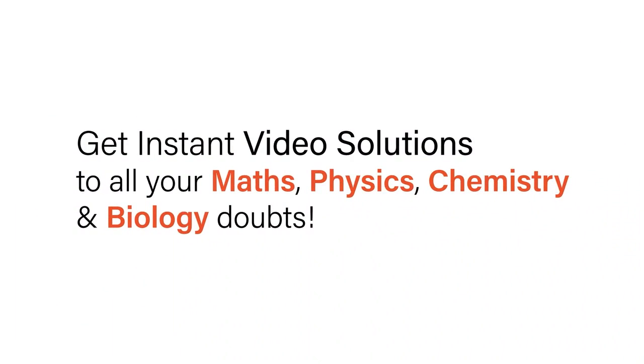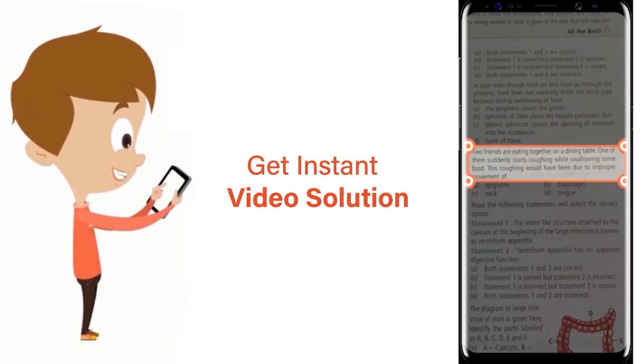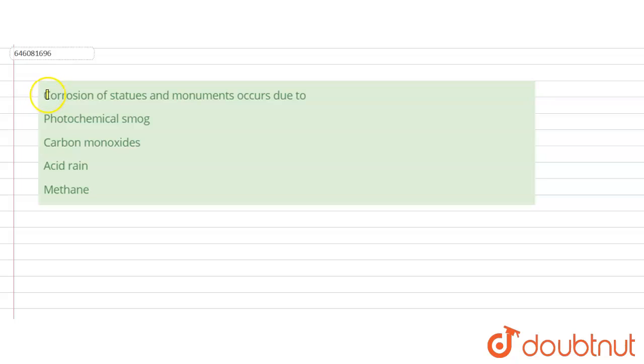With Doubtnut, get instant video solutions to all your maths, physics, chemistry, and biology doubts. Just click the image of the question, crop it, and get instant video solutions. Download Doubtnut app today. Hello students, corrosion of statues and monuments occurs due to - this is our question.